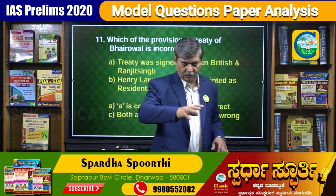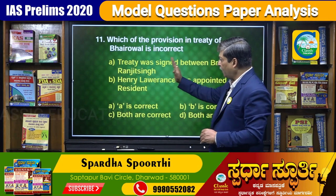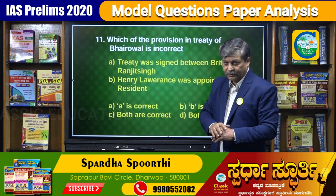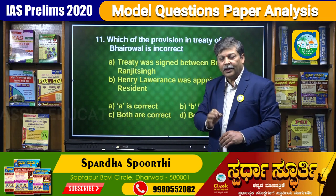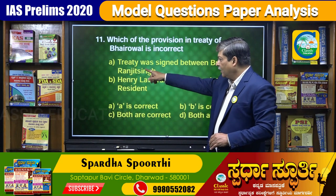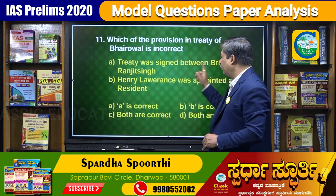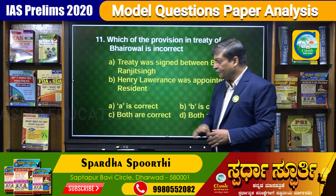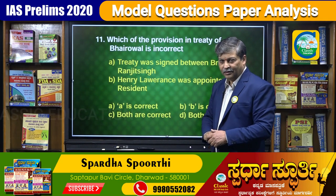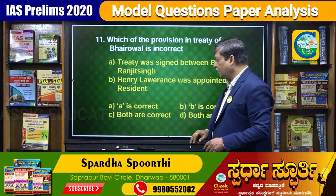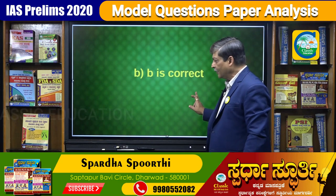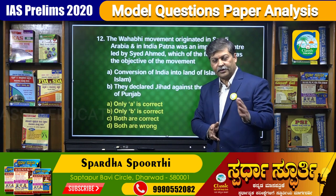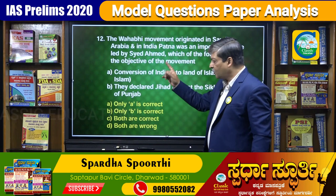These five questions are related to medieval Indian history. Now we come to the last part — five questions related to modern India. Which provision in the Treaty of Bhyrowal is incorrect? The treaty of Bhyrowal was in 1846. Statement A says the treaty was signed between British and Ranjit Singh — easily you can say Ranjit Singh had died in 1839 itself, so this statement is wrong. Statement B says Henry Lawrence was appointed as the Resident — that is correct. The answer is statement B is correct, meaning only statement A is wrong. The Treaty of Bhyrowal followed the Treaty of Lahore after the first Anglo-Sikh War.